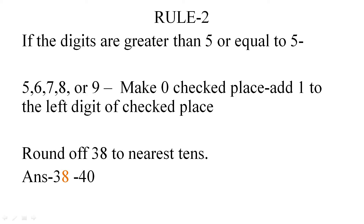The second rule is: if the digit at the checked place is 5 or greater than 5 — that is, 5, 6, 7, 8, or 9 — then the checked place and all digits to its right will be converted to 0, and 1 will be added to the digit on the left. For example, if you want to round off 38 to the nearest 10s, you will check the place of 1s and here the 1s place is 8. Since 8 is greater than 5, you will add 1 to the left digit: 3 plus 1 equals 4, and 8 will be converted into 0, giving the answer 40.